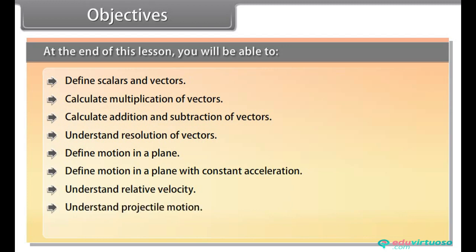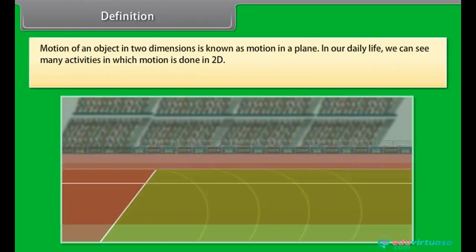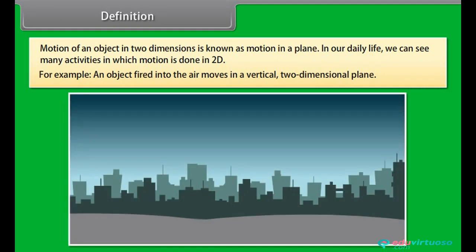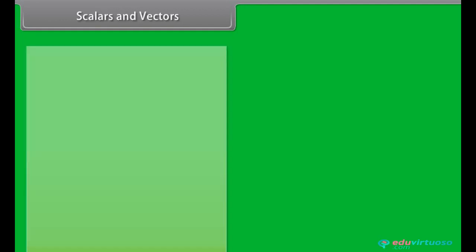Definition. Motion of an object in two dimensions is known as motion in a plane. In our daily life, we can see many activities in which motion is done in two dimensions. For example, an object fired into the air moves in a vertical two-dimensional plane.